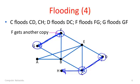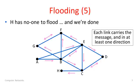So F in fact, you'll see here, is very fortunate or popular. It's gotten yet another copy of the message. So F has received a copy of this message along all of its links. And it's sent it out once. And finally, we've reached H. H has no one left to flood because it's at a dead end. And we're done with the flooding algorithm.